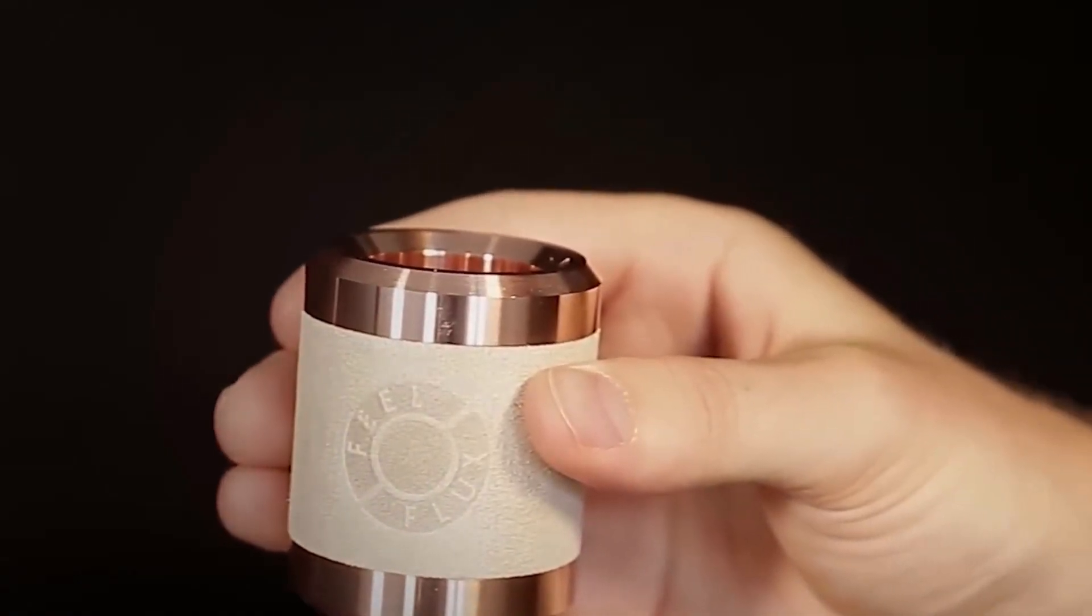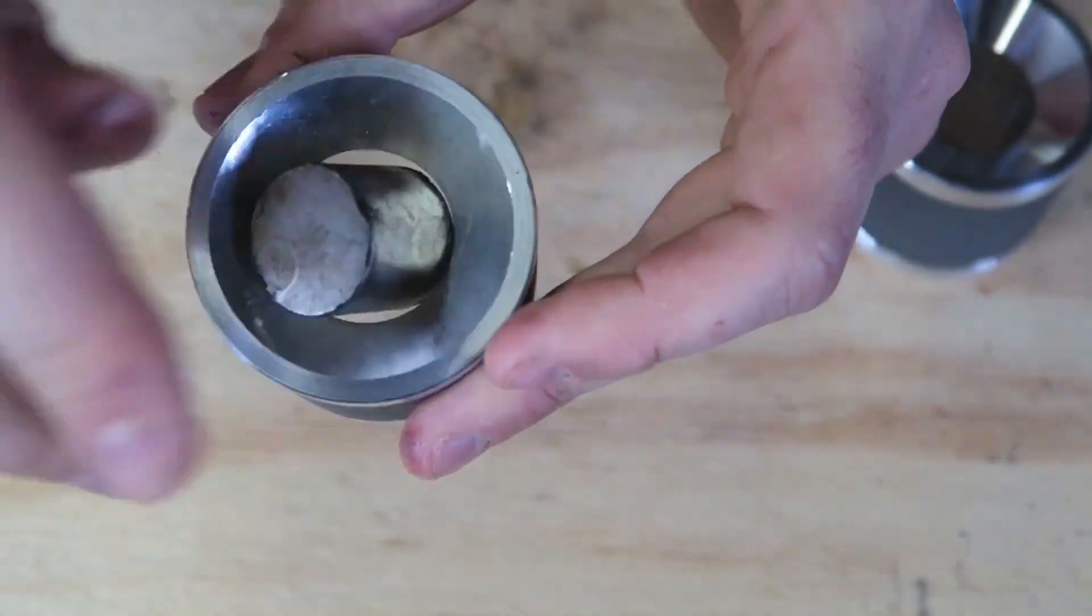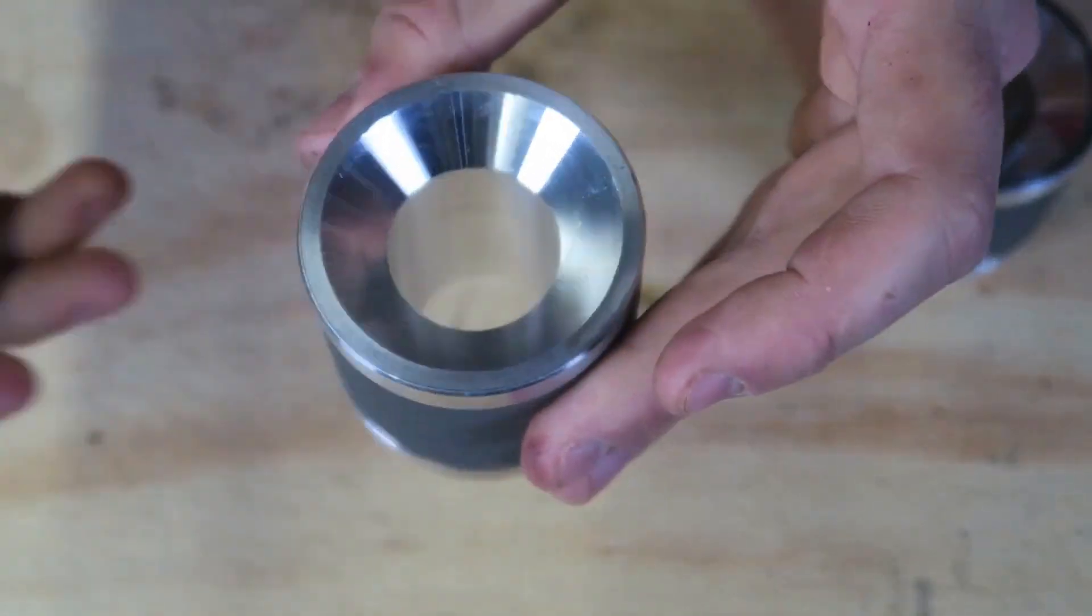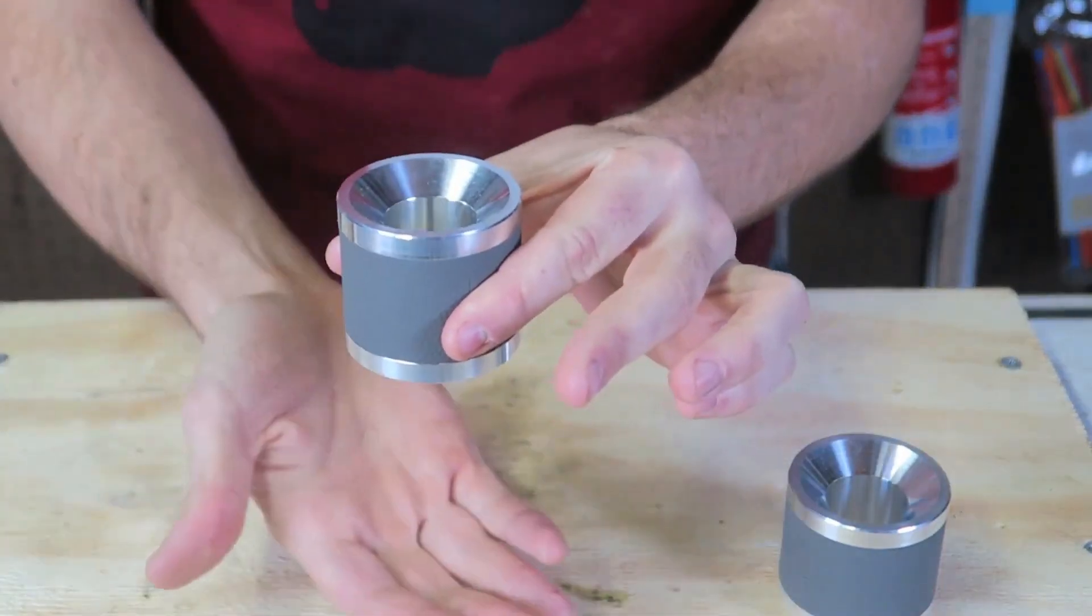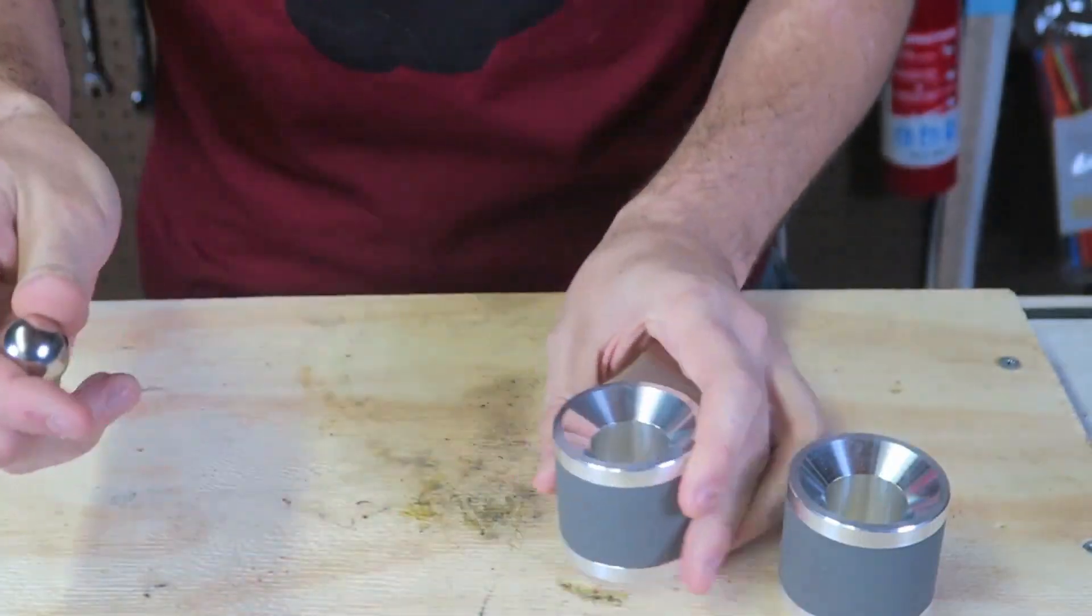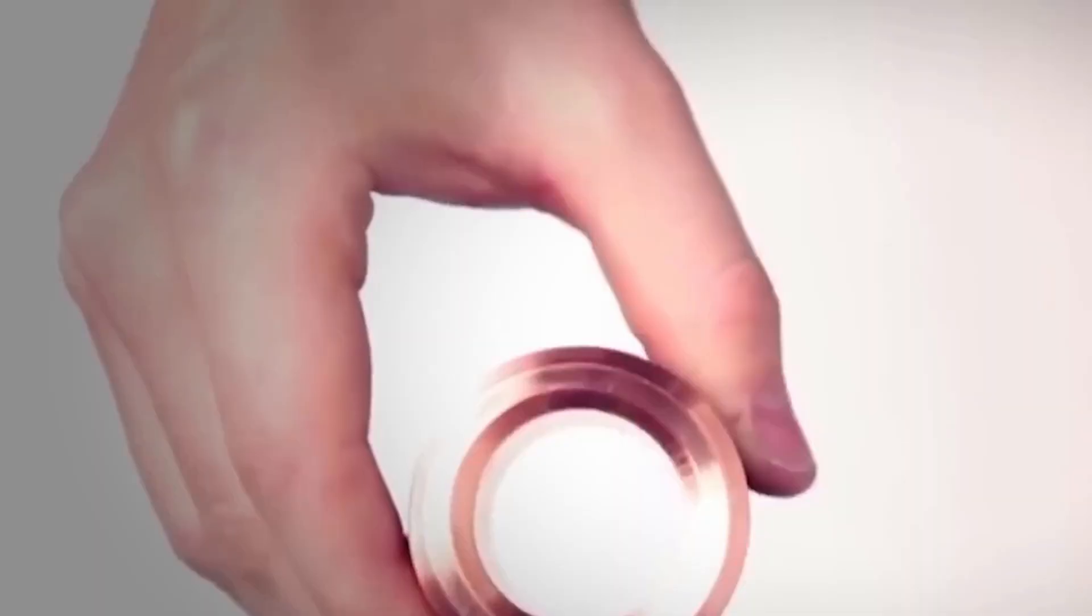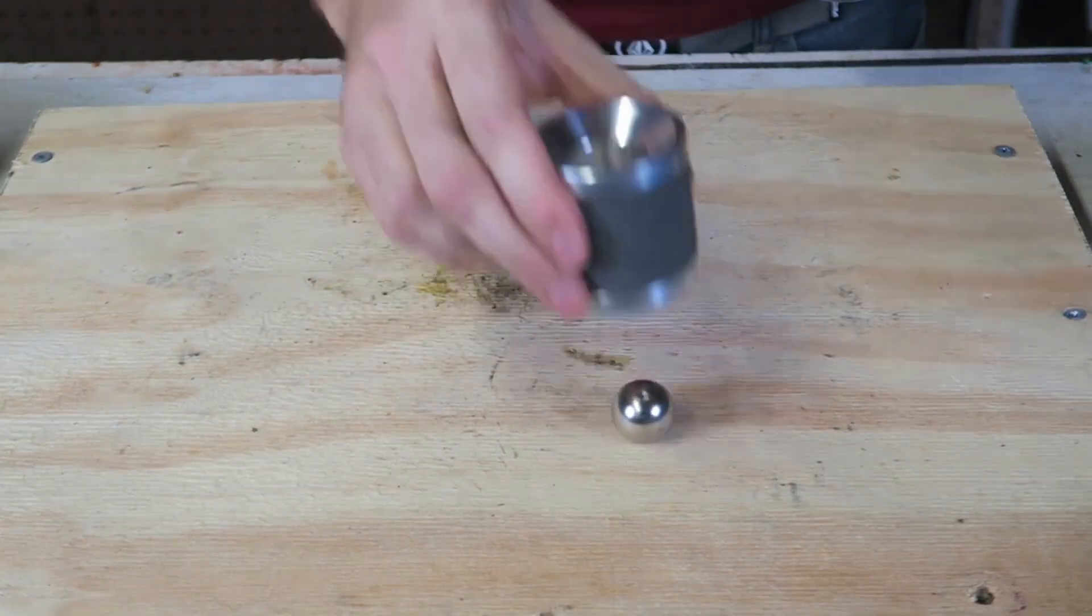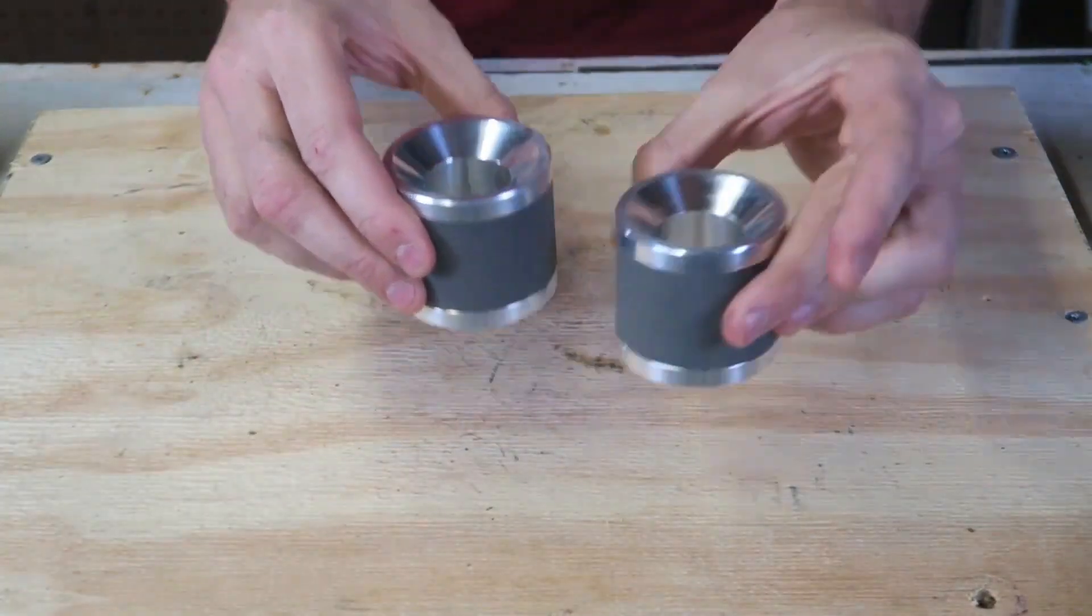The ball is a powerful neodymium magnet. As it falls through the non-magnetic copper tube, its moving magnetic field induces electrical currents in the copper walls, known as eddy currents. According to Lenz's law, these currents create their own magnetic field that opposes the field of the falling magnet. This opposition creates a powerful braking force, slowing the ball's descent dramatically. It's a jaw-dropping demonstration of unseen forces at play.